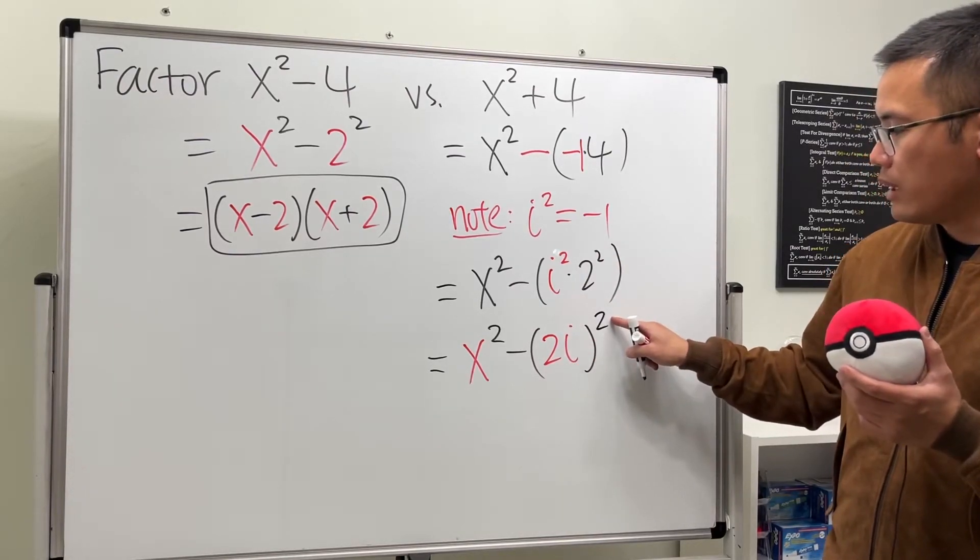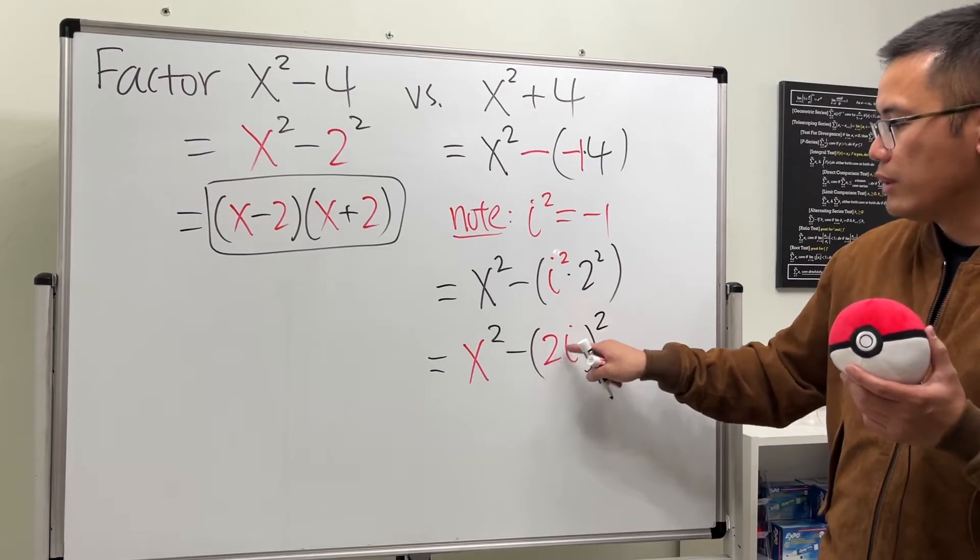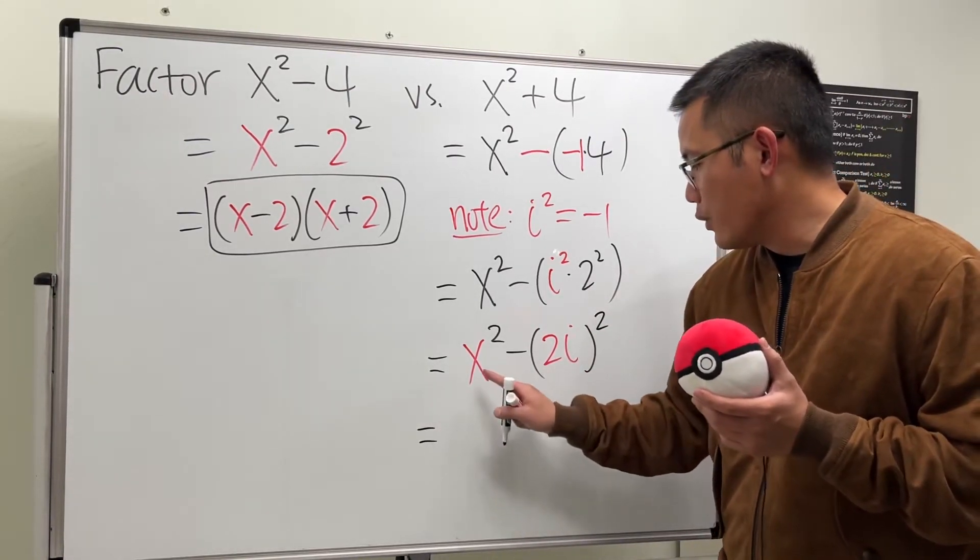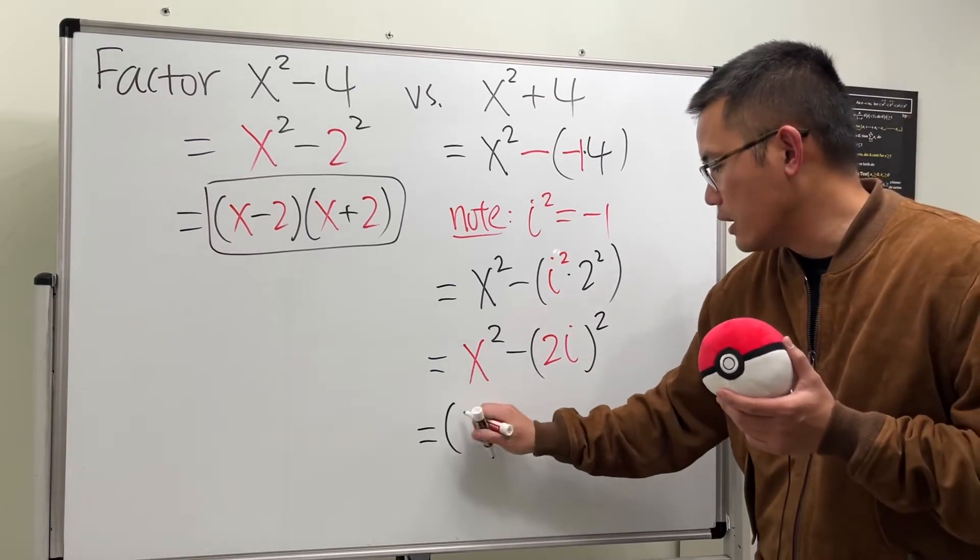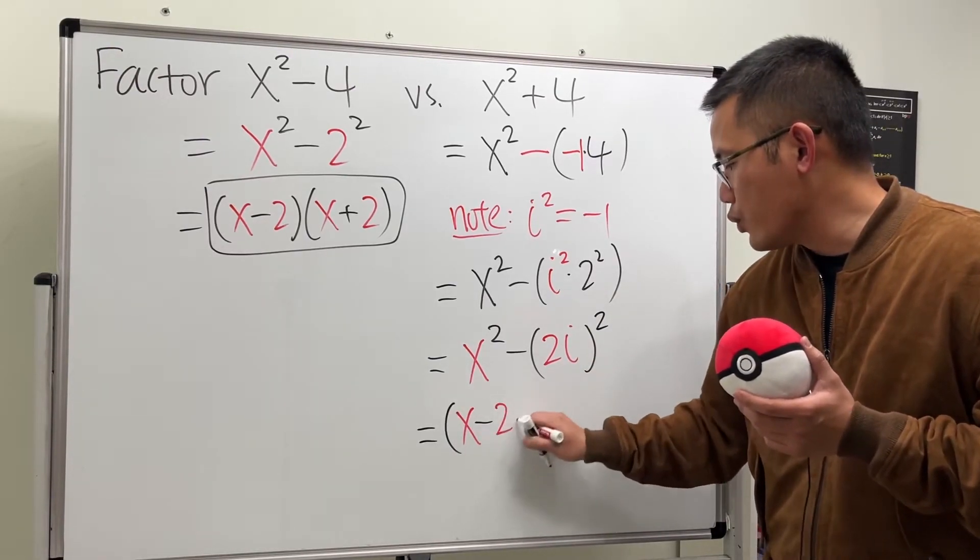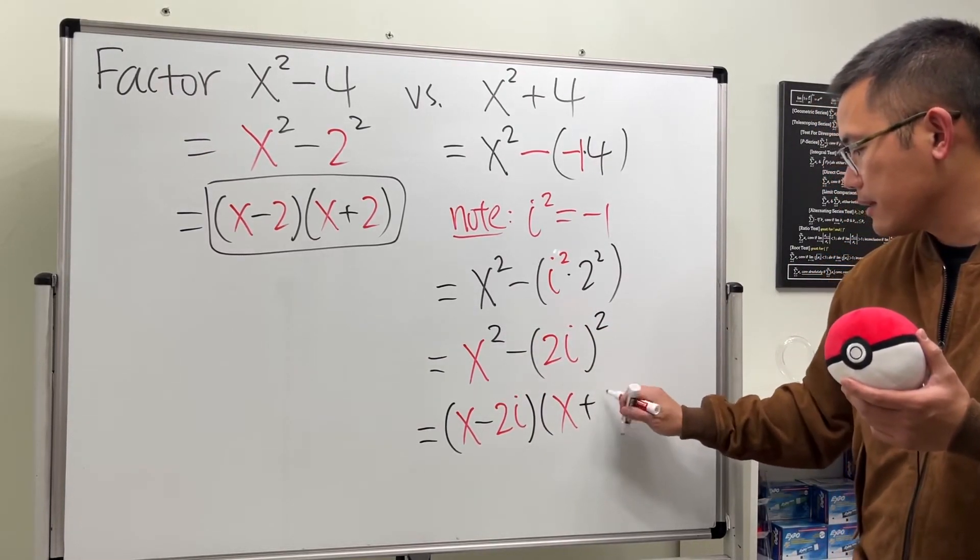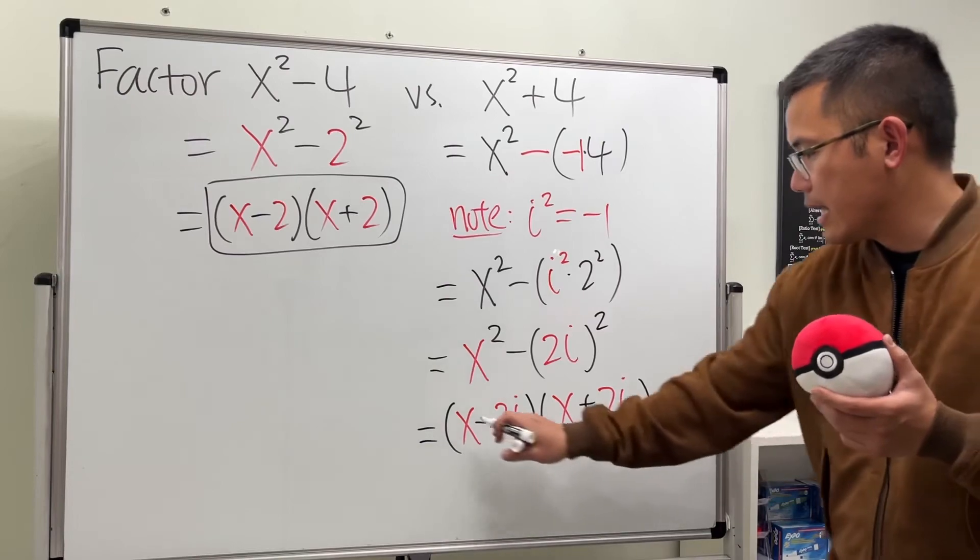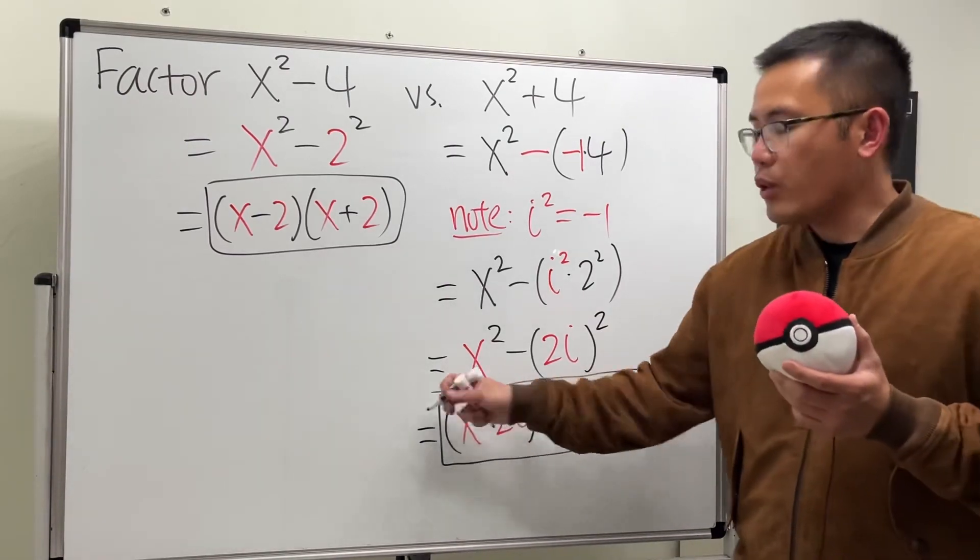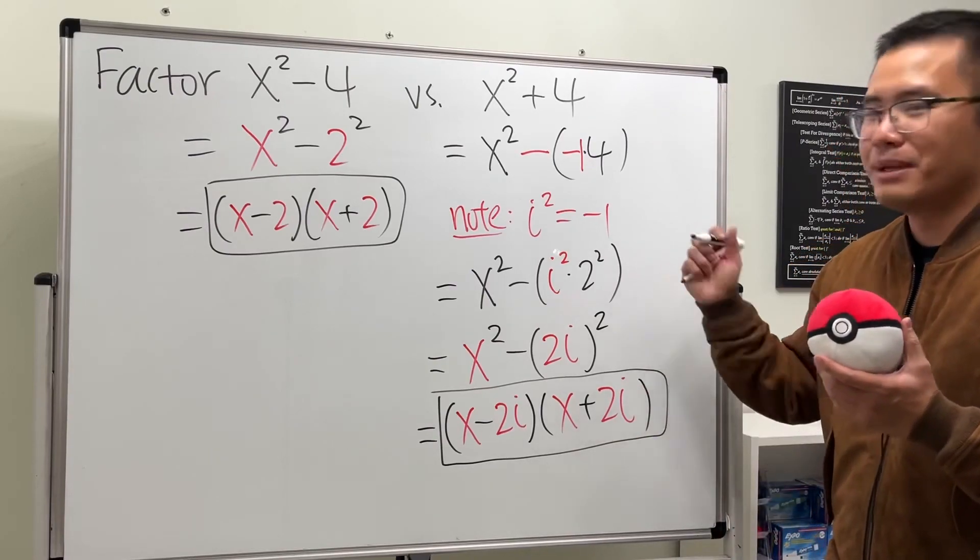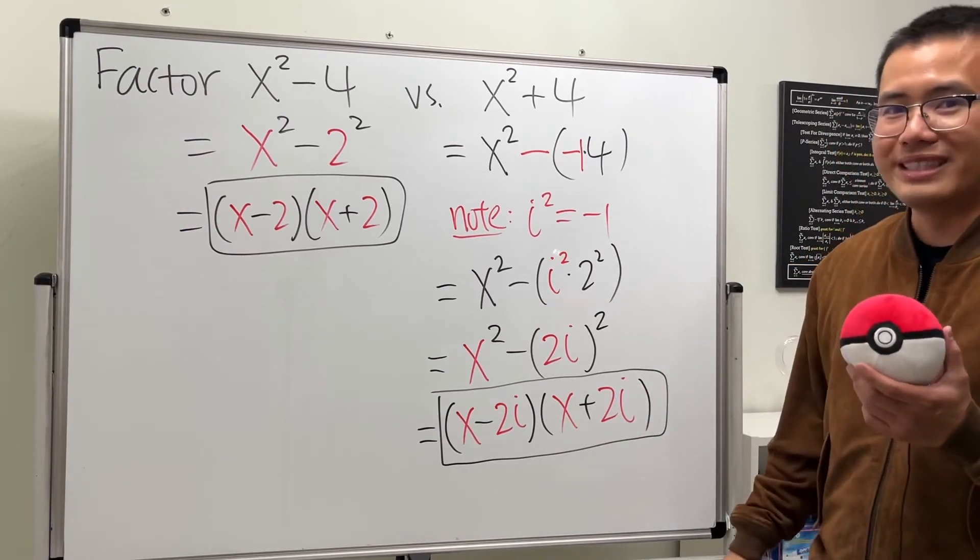All right, so to factor this, same thing. We will have this minus that for the first factor. So we get x minus 2i, and we multiply by x plus 2i. So this is how you factor a sum of 2 squares if you're allowed complex numbers and the imaginary unit. That's it.